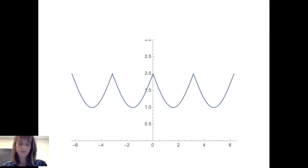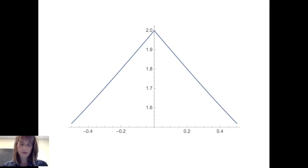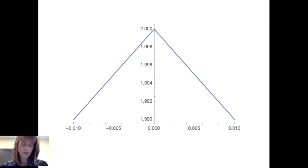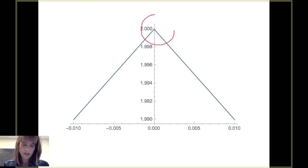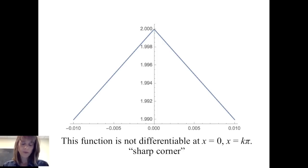Here's another example with a periodic function. Focusing on some of the sharper points — for instance, at x equals 0 — and zooming in from negative 0.5 to 0.5, it doesn't yet look linear. Zooming in further to a window where x goes between negative one one-hundredth and positive one one-hundredth, it still does not look like a line. This function is not differentiable at x equals 0 or any multiple of pi due to sharp corners existing at those points.